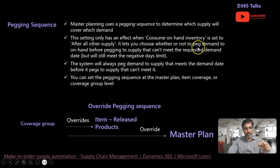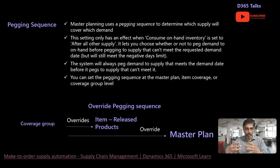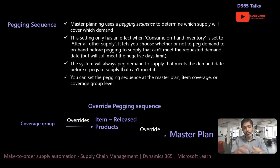It lets you choose whether to peg demand to on-hand before pegging to supply that can't meet the requested demand date. If you want to consume on-hand first, configure it as 'before all other supply'. If you want to check existing supplies expected before the demand date — for example, a vendor supplying material on Jan 29th for a Jan 30th demand — you configure accordingly to meet that demand.